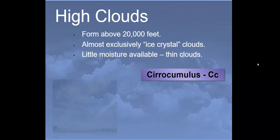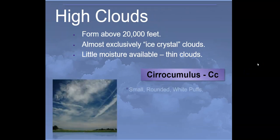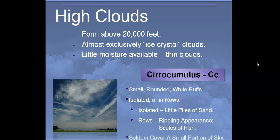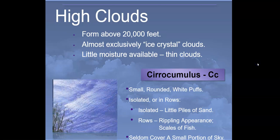The next high cloud is the cirrocumulus. These are small and rounded, coming in little white puffs. They can be isolated — sometimes looking like little piles of sand in the sky — or in rows, appearing rippled like the scales of a fish. They generally cover most of the sky, and we often see them here in the winter.